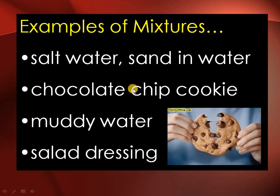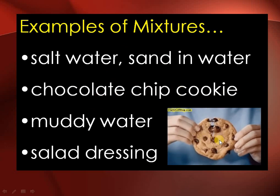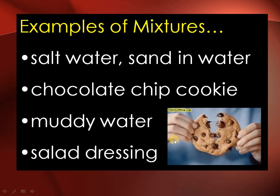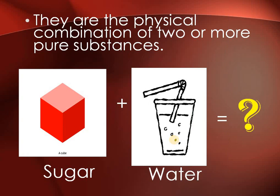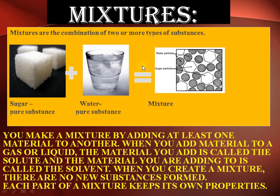Examples of mixtures: salt water, sand in water, chocolate chip cookie, muddy water, and salad dressing. When two pure substances like sugar and water combine, a mixture forms. Water has space between its particles as a liquid, and sugar as a solid gets its particles trapped into the gaps between liquid particles. The material you add is called the solute and the material you add it to is called the solvent — the mixture forms and each part retains its properties.